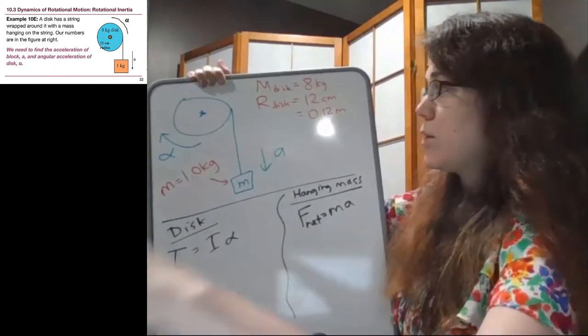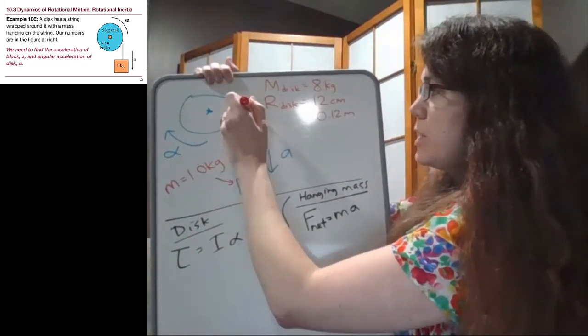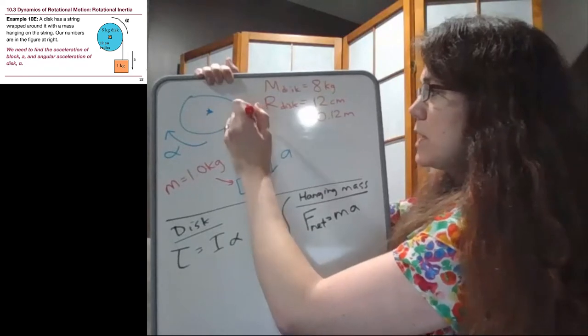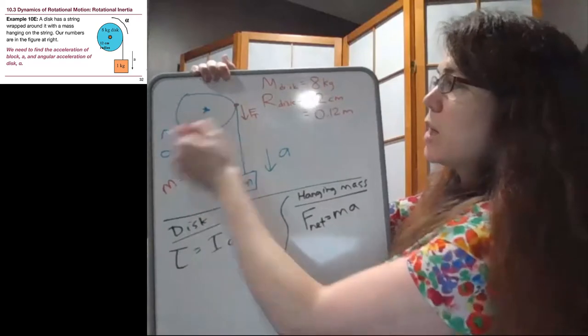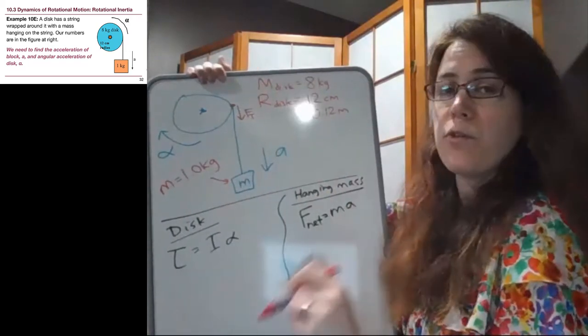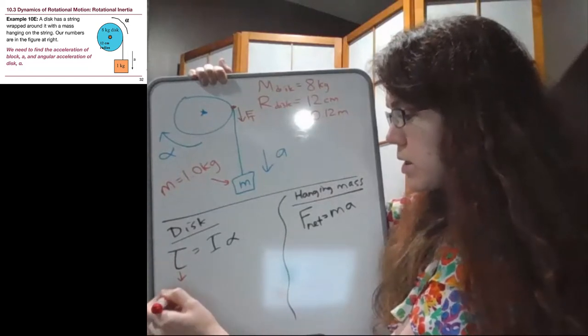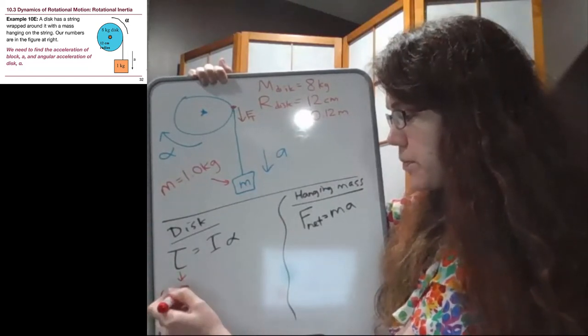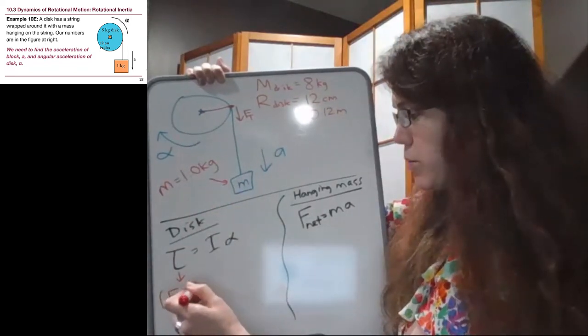One of the key things to recognize is that it is tension here that is causing, not normal force, tension, tension here that is causing this to rotate, that is the force that is causing this torque. So this torque is the unknown tension times the distance it's acting over, which is 0.12.